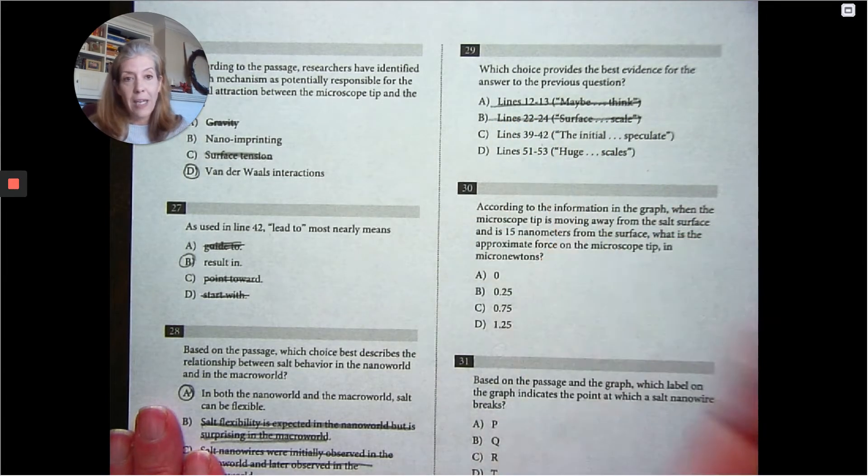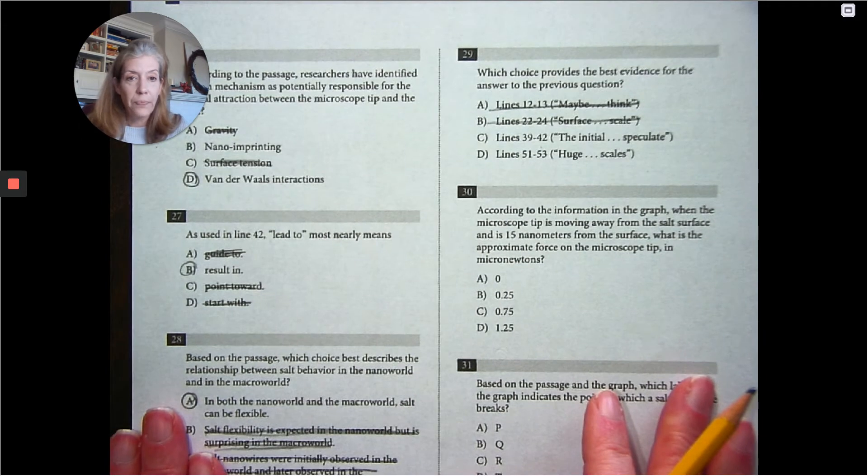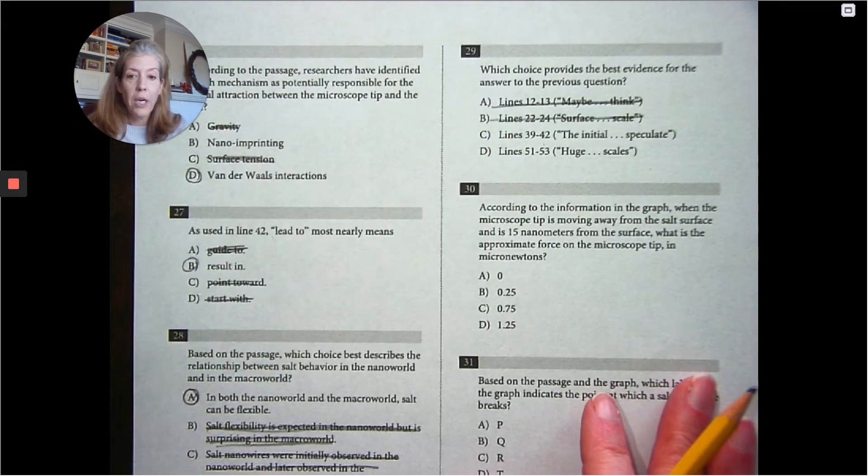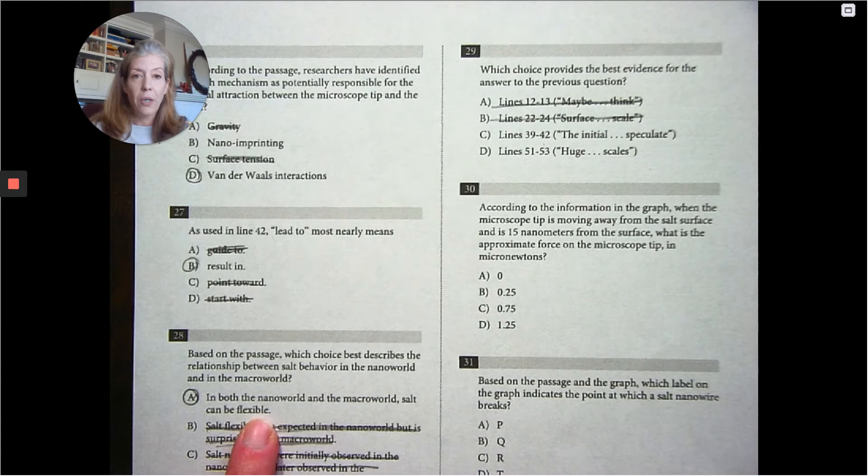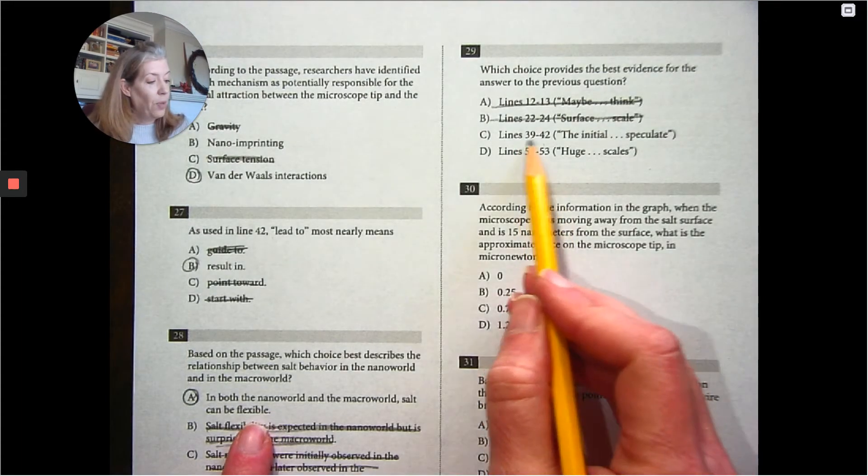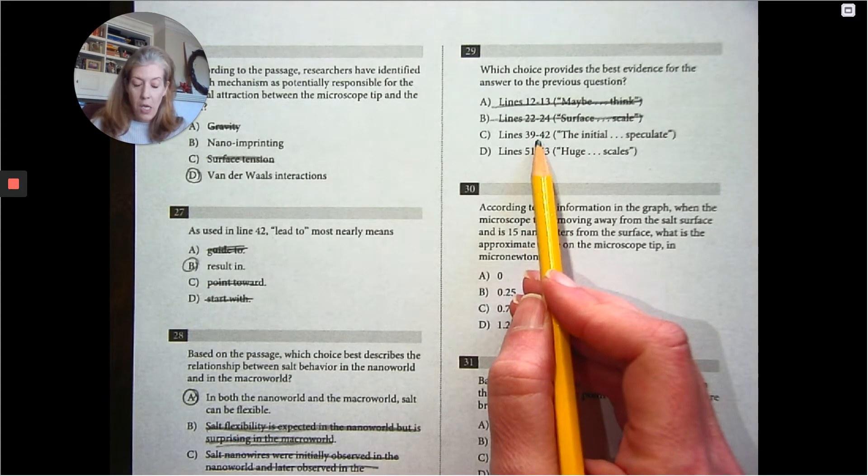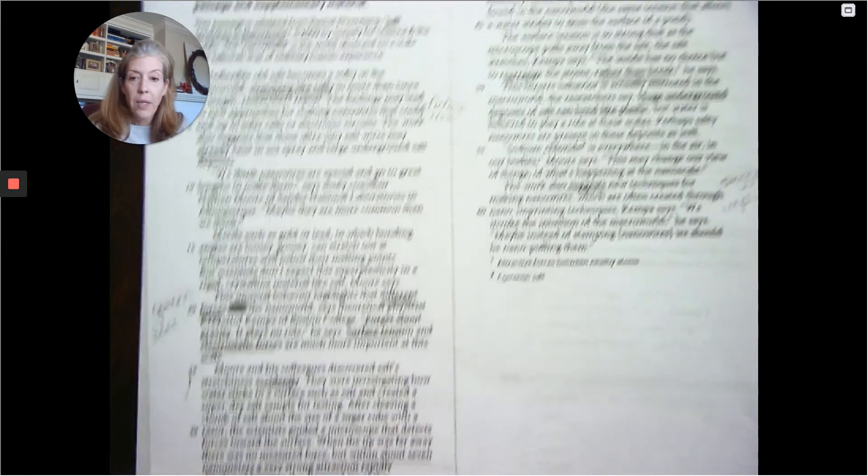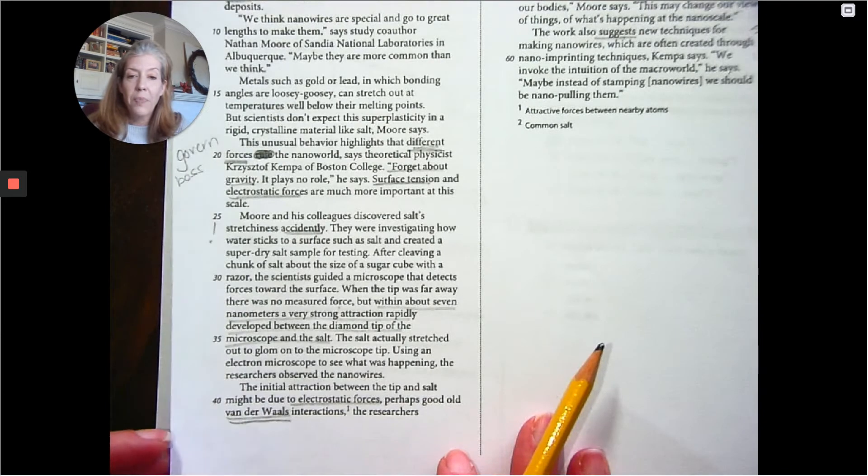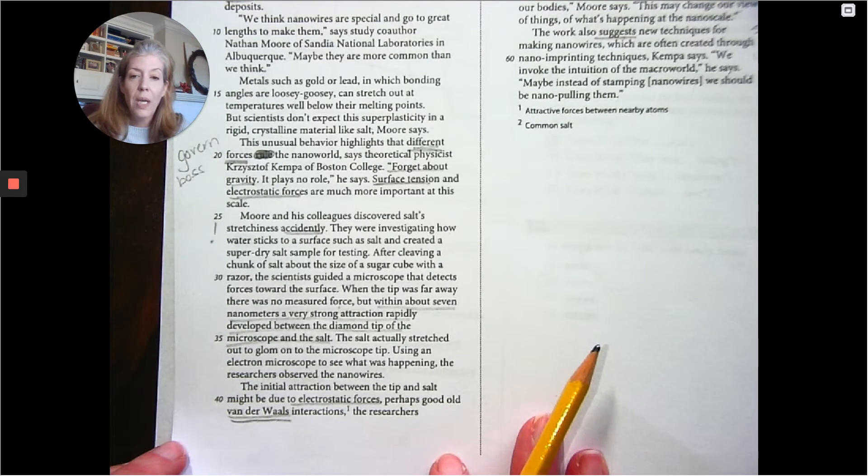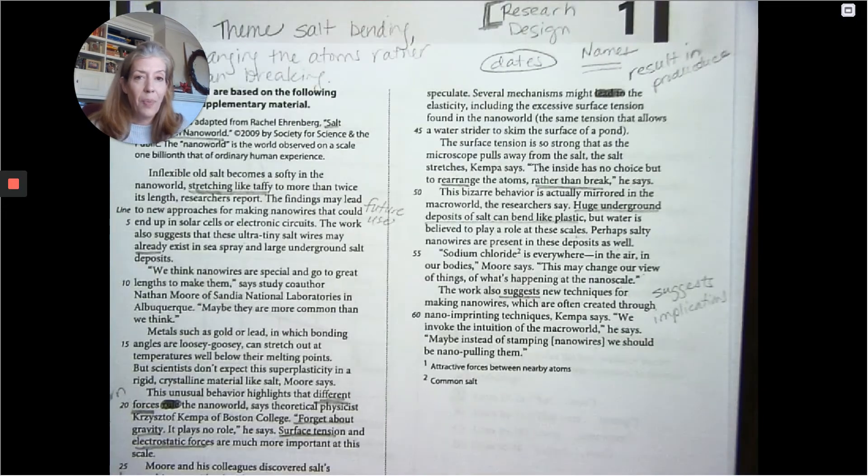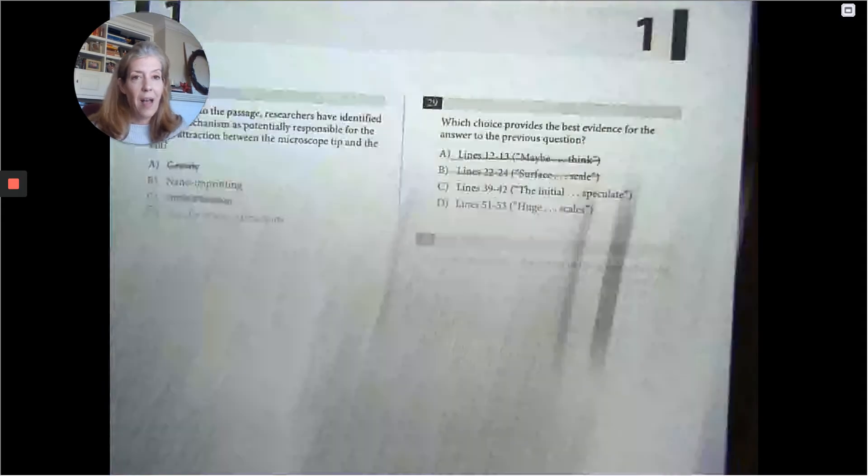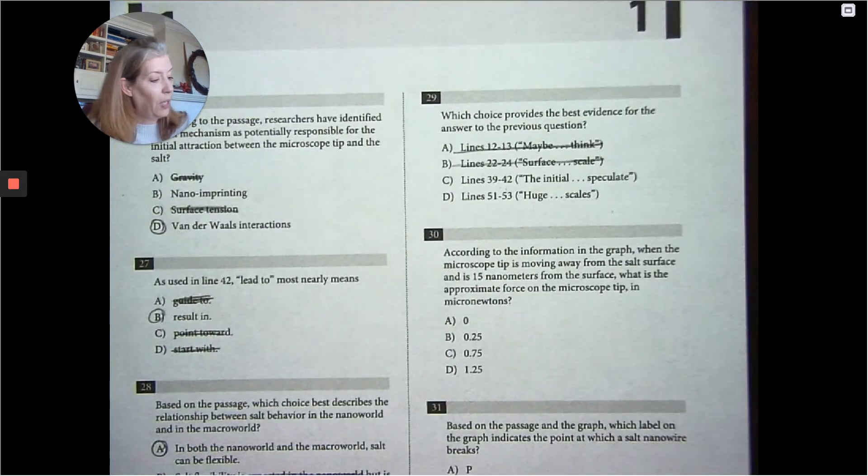We can get rid of anything before line 42. Because this ends on 42, I'm going to keep it just for safety's sake. So we're looking for that salt can be flexible in both the nano world and the macro world. And so we'll start with 39 to 42. The initial traction between the tip and salt might be due to electrostatic forces, perhaps good old Van der Waal's interactions, the researchers speculate. That doesn't tell us anything about the macro world. So we're going to get rid of that one.